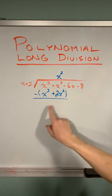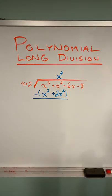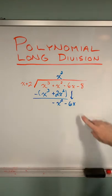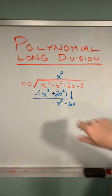We can place the result in brackets and subtract these two columns. That's going to result in negative x squared. We're going to bring this negative six x down and repeat the whole process.